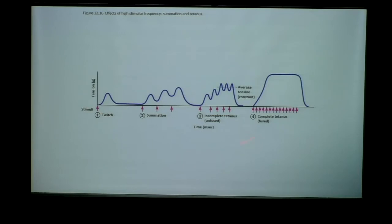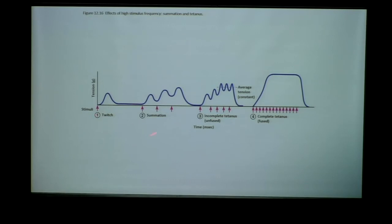Let's look at this timeline from a single twitch to complete tetanus, comparing force to time. A twitch is that single brief period of muscle contraction — at the level of the motor unit, the muscle fiber, or the entire muscle. If we start to frequently fire action potentials, we then get summation.